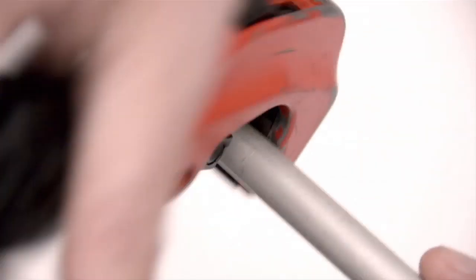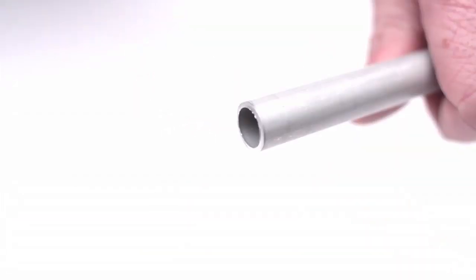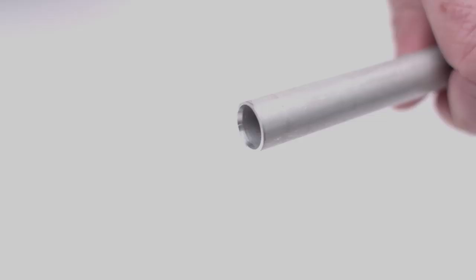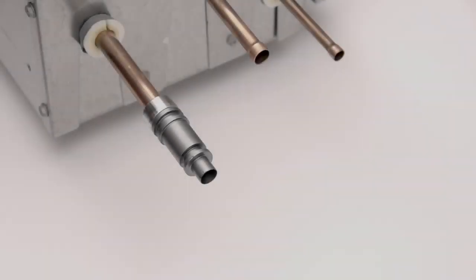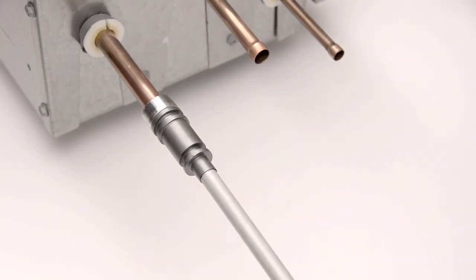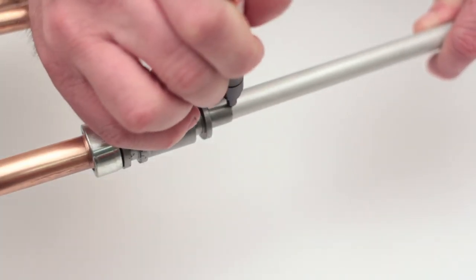Cut the pipe to the required length. Deburr the pipe. Locate the insert in the prepared pipe. Insert the pipe into the connector, ensuring it is fully home.